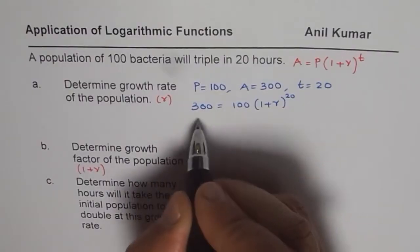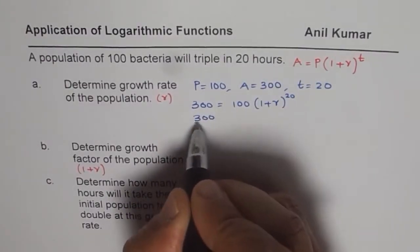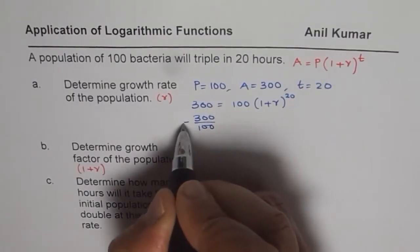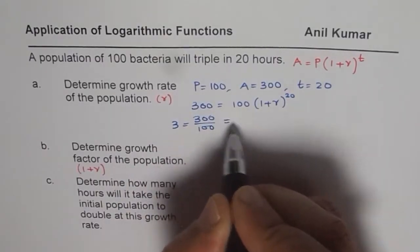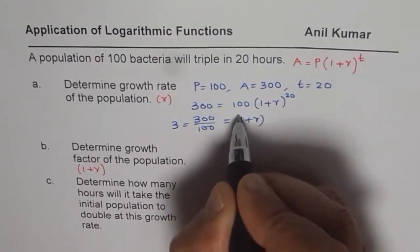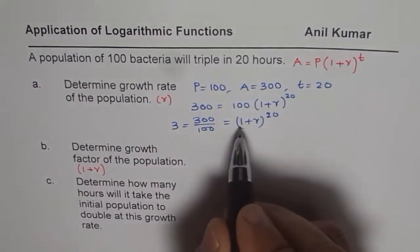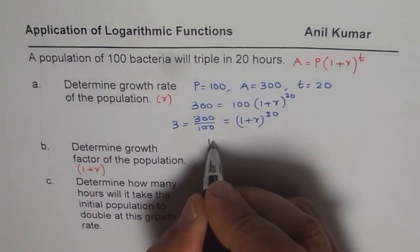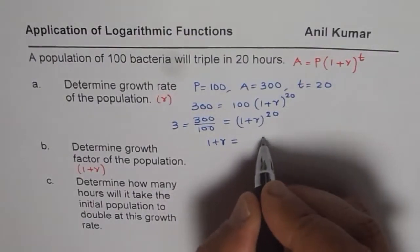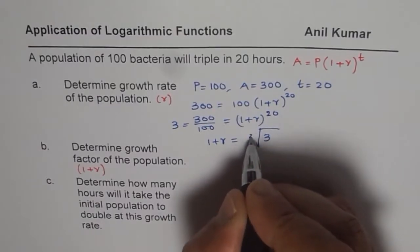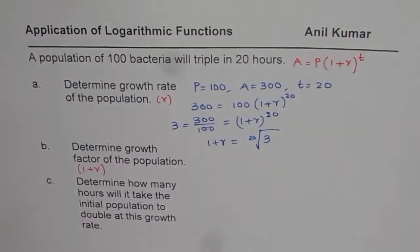Now if I divide 300 by 100, I get the number 3. It should be equals to 1 plus r to the power of 20. Now I have to take the 20th power to get 1 plus r. So 1 plus r equals the 20th root of 3. Do you see that?